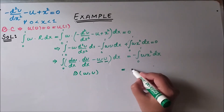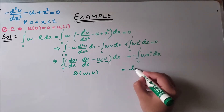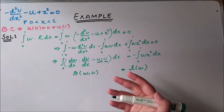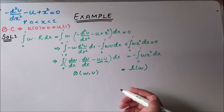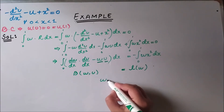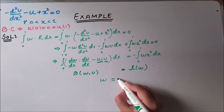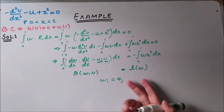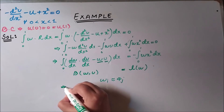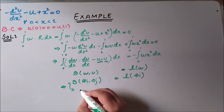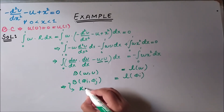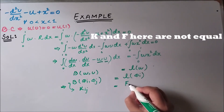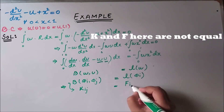On the other side, the term containing only the weight function is known as the linear function, denoted L(w). In the weak form, the basic assumption is that the weight function is approximated by the shape function. Plugging these approximations into the bilinear and linear forms gives us the stiffness matrix K_ij and the load vector f_i.